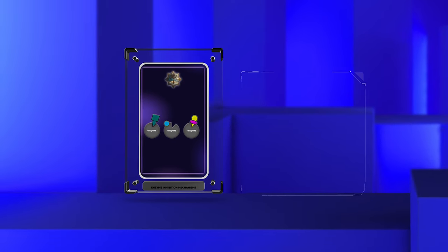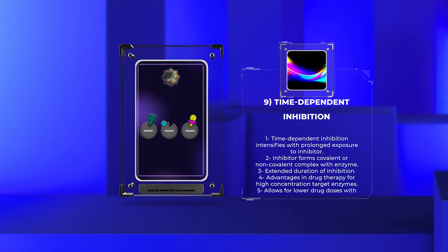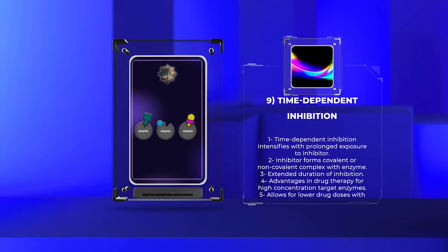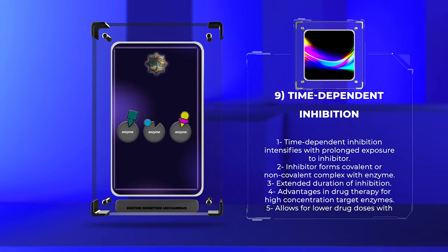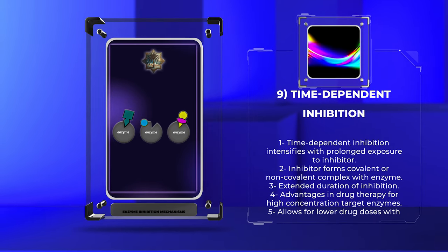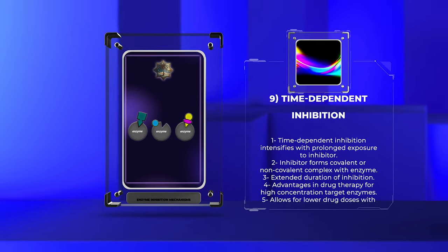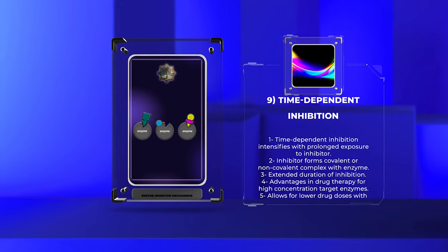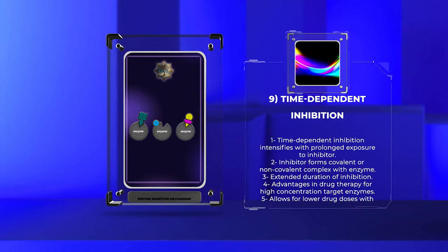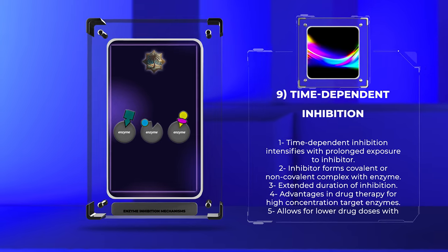Time-dependent inhibition refers to the inhibition of an enzyme's activity that intensifies with prolonged exposure to an inhibitor. This occurs when the inhibitor molecule forms a covalent or non-covalent complex with the enzyme, resulting in an extended duration of inhibition. Time-dependent inhibitors offer advantages in drug therapy, mainly if the target enzyme is present in high concentration and has a long half-life. This allows for the administration of lower drug doses while maintaining a sustained pharmacological effect.